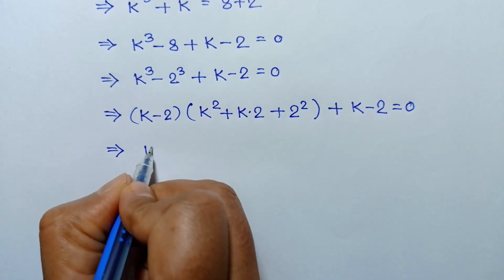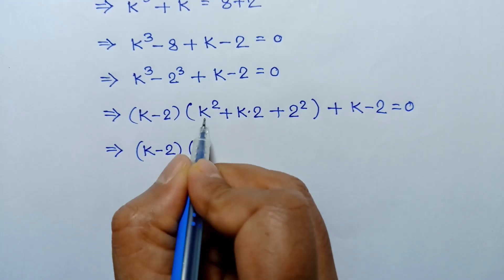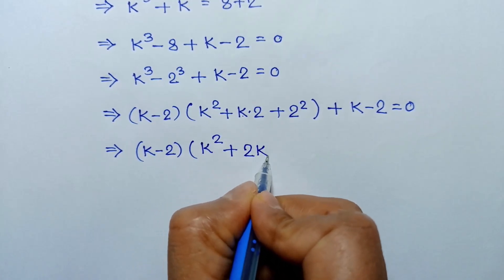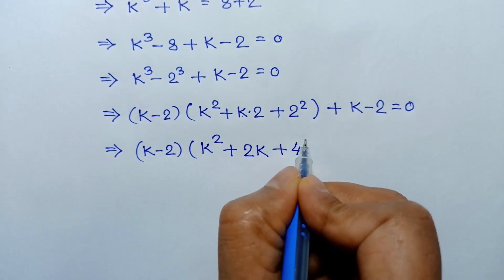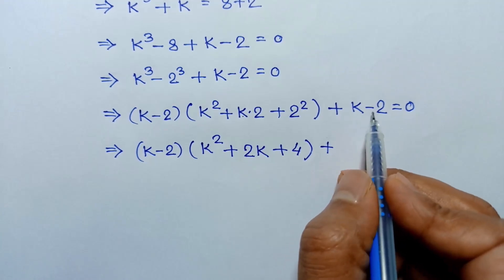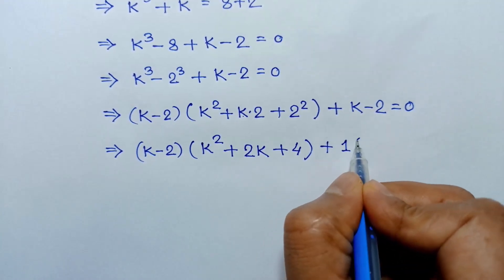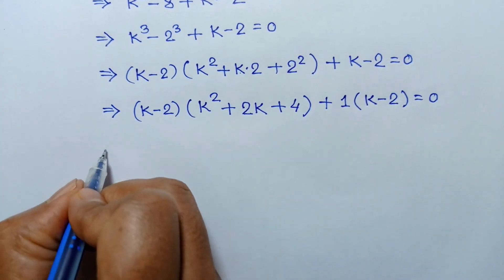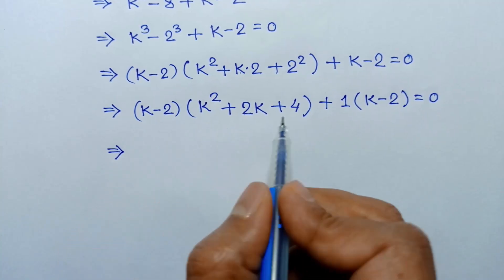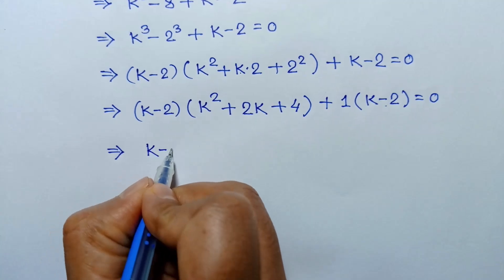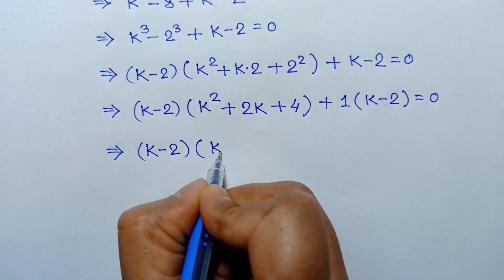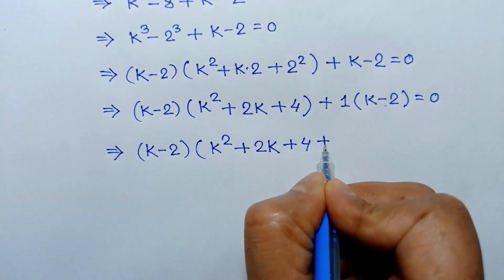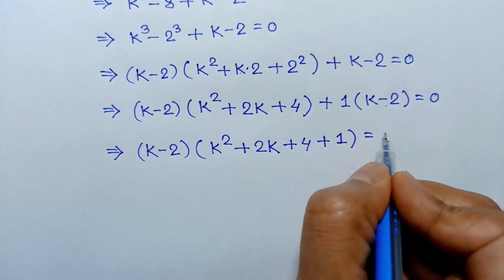So k minus 2 times k square plus 2k, and taking common 1 from the remaining two terms, we can write 1 times k minus 2 is equal to 0. Now taking common k minus 2, we can write k minus 2 times k square plus 2k plus 4 plus 1 is equal to 0.